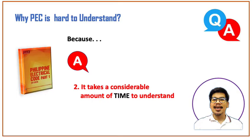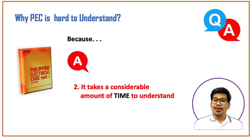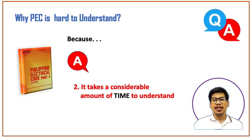The second reason why PEC is hard to understand is that it takes a considerable amount of time to understand and assimilate the code's meaning. This is mainly due to word meaning and its application in the industry. There are few examples, references, and visual interpretations available explaining every article in the Philippine Electrical Code. For now, I have been writing a guide for PEC for some time — it is my attempt to explain it to young RMEs and future engineers.